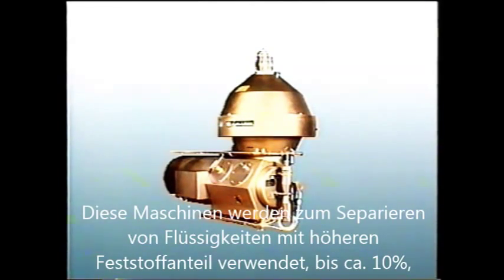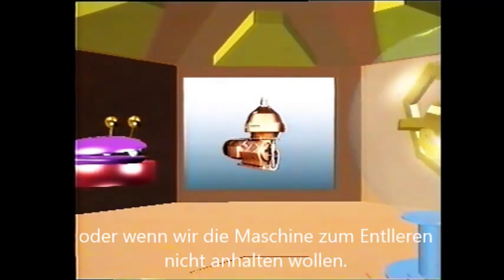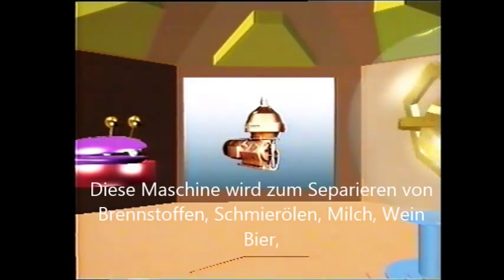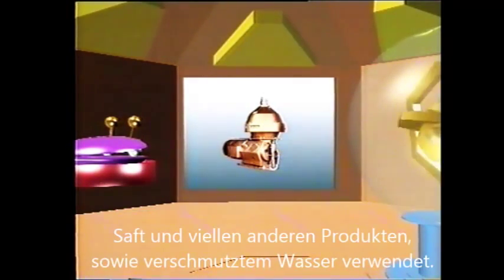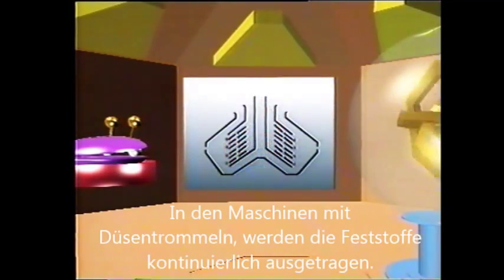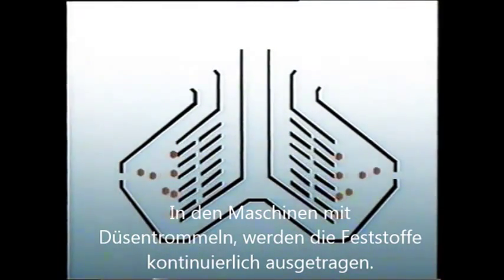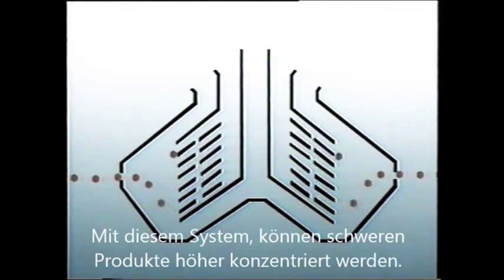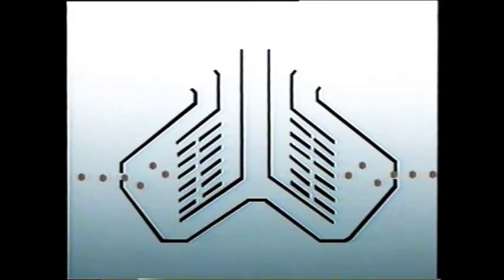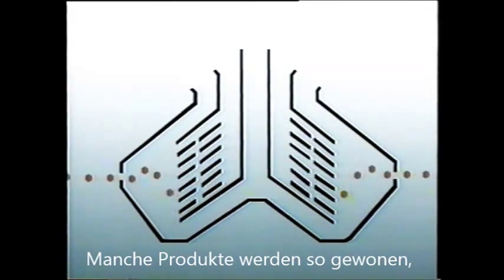PX separators are used for liquids with a higher solids content — up to 10% — or when we don't want to stop the machine for emptying. They are used for fuel and lubricating oils, milk, wine or beer, fruit juice, and radioactive waste water. In the nozzle separator, the solids escape continuously through the nozzles around the bowl periphery. With this system, the solids may be recycled for further concentration. In some cases, the solid itself is being recovered and the liquid is the byproduct.